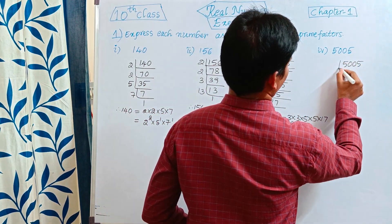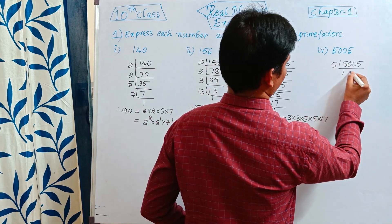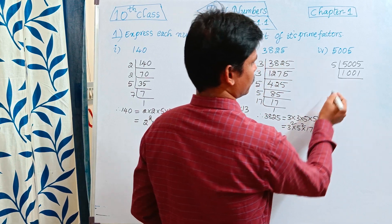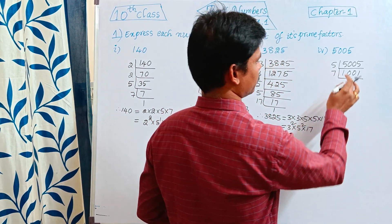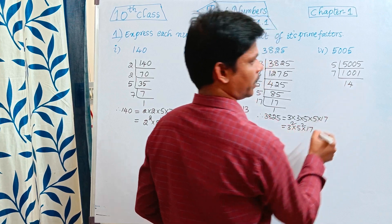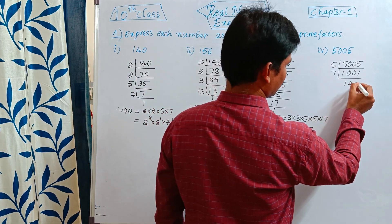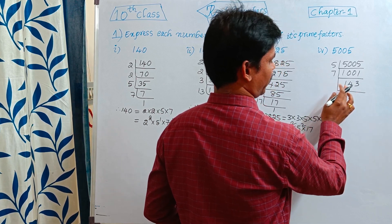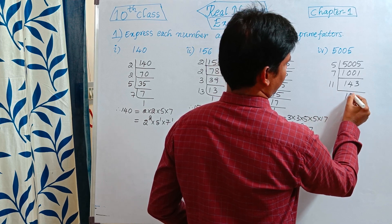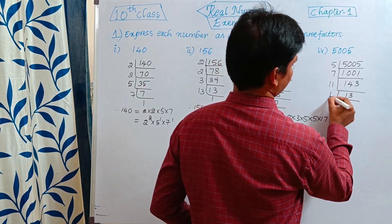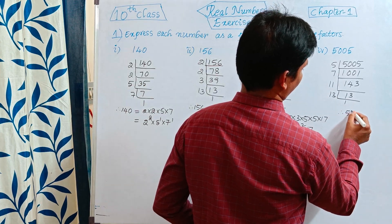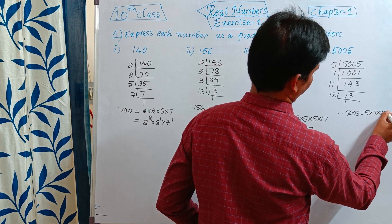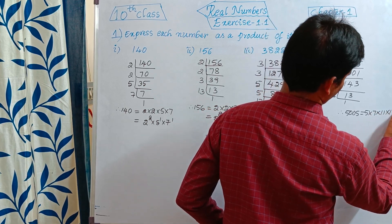The fourth number is 5005. It is divisible by 5: 5 divides 5005 giving 1001. Next, 1001 is divisible by 7: 7 divides 1001 giving 143. Then 143 is divisible by 11: 11 divides 143 giving 13. And 13 is prime. Therefore, 5005 is equal to 5 into 7 into 11 into 13.